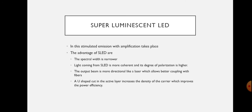Next is the superluminescent LED. In the case of superluminescent LED, the basic principle is that stimulated emission with amplification takes place, but there is no feedback as in the case of a laser. In the case of a laser, stimulated emission with amplification takes place and feedback is obtained by providing reflectors. But here in the case of superluminescent LED, it is a PN junction diode where stimulated emission occurs.